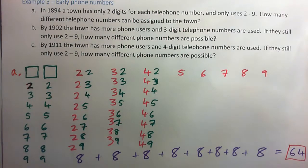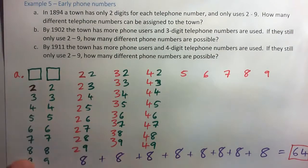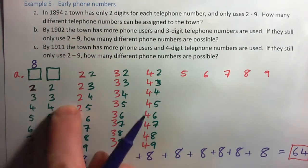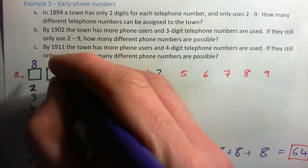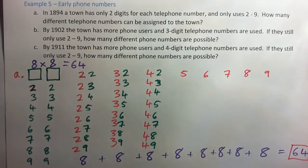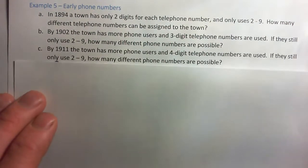That's the writing-it-out way of doing it, and it's always good to do that if you want to get a visual or if you're stuck on a question. But there are 8 possibilities for the first digit, and there are also 8 possibilities for the next digit — because remember, 1 and 0 are not included. So you can actually multiply: 8 times 8 gives you 64. I really want you to think about and understand what's going on rather than just memorizing methods.